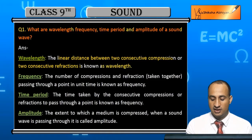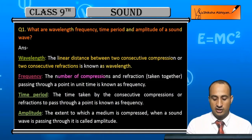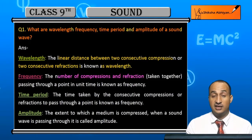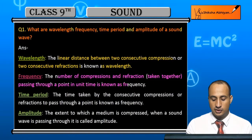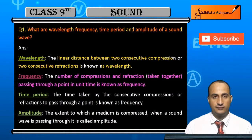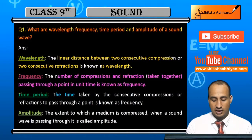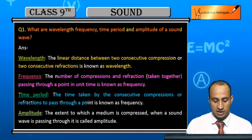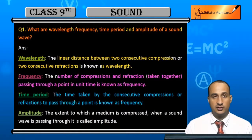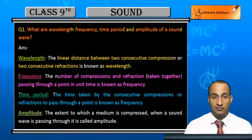What is frequency? The number of compressions or rarefactions passing through a point in a unit time is known as frequency. What is time period? The time taken by two consecutive compressions or two consecutive rarefactions to pass through a point is known as time period.